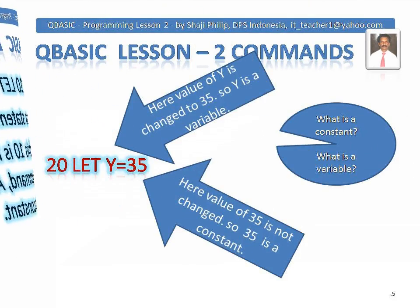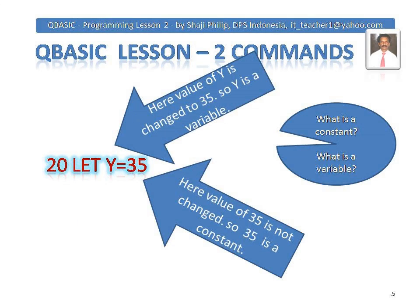Again, you can assign another value. LET y = 35. Here the value of y is assigned as 35, so y is a variable. The value 35 will not change — it will always be 35 — so 35 is a constant. Now you are in a position to answer these questions: What is a constant and what is a variable?